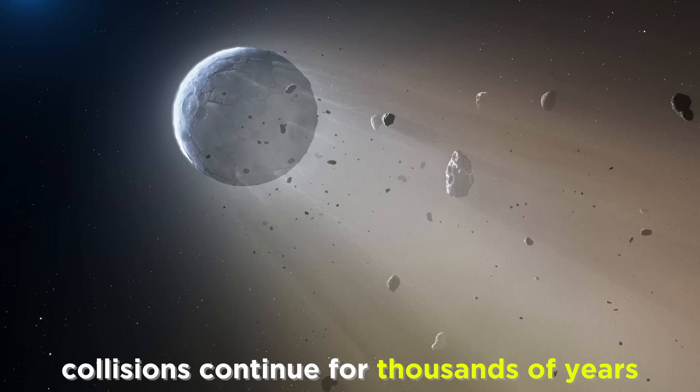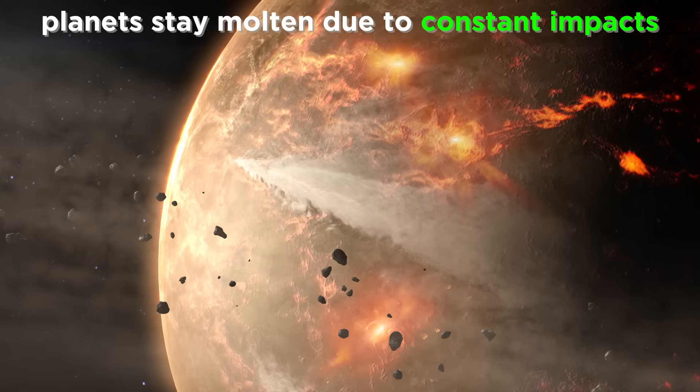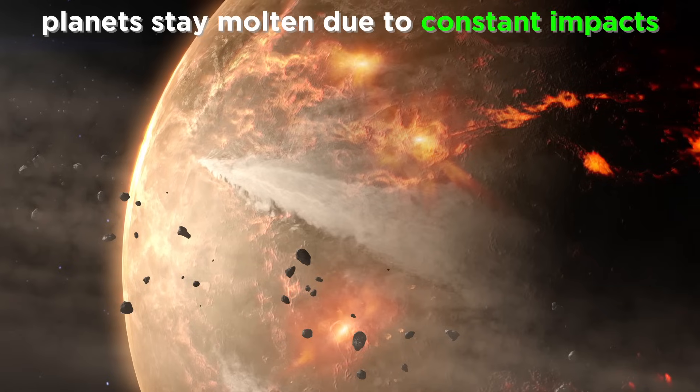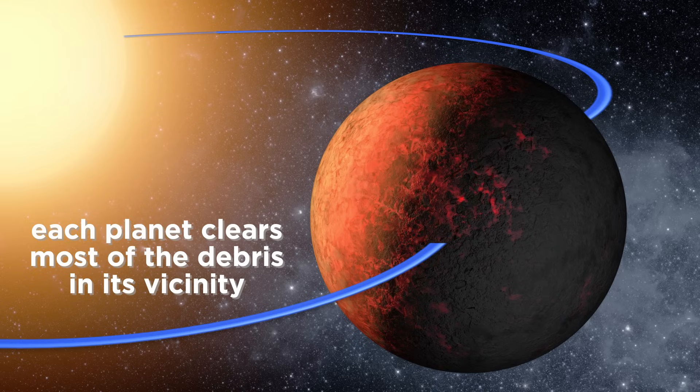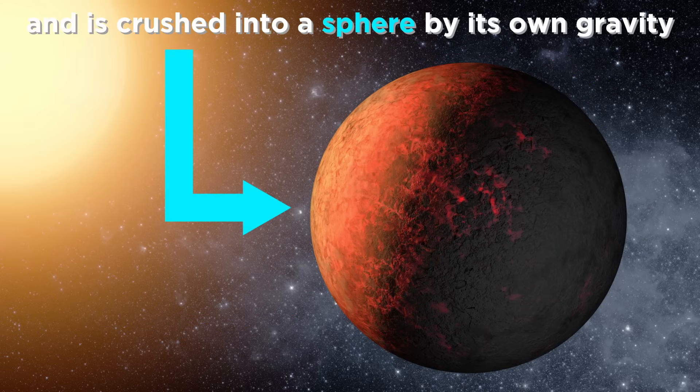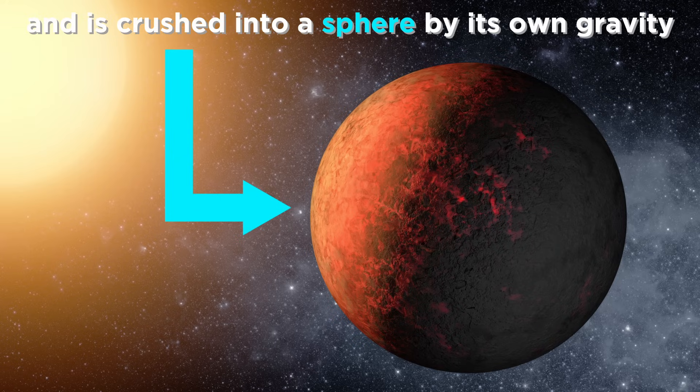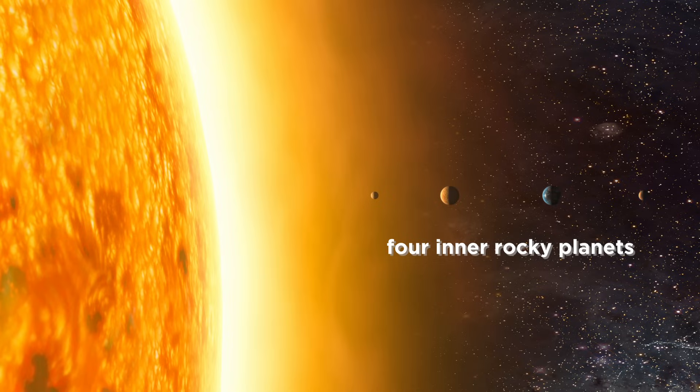Over hundreds of thousands of years, all of these clumps of rock and ice continued to collide and accumulate, with every impact generating lots of heat, keeping things relatively molten. As most of the surrounding debris at each particular orbital distance was cleared, these objects became massive enough to take on a spherical shape under the influence of their own gravity. These are the inner rocky planets we know today.